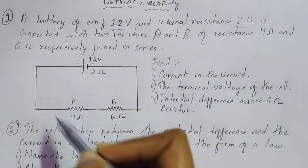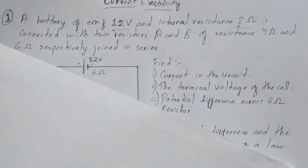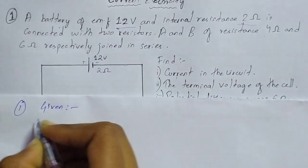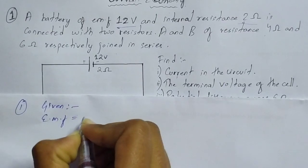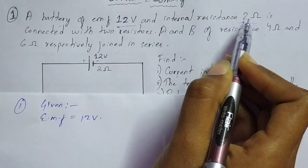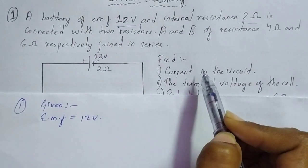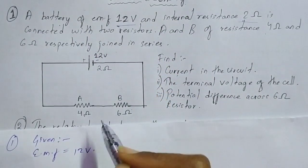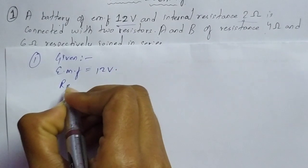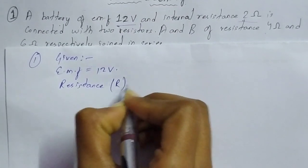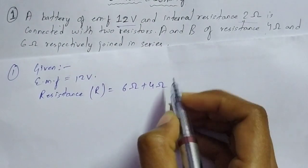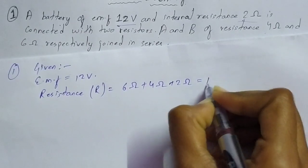First you have to find out the current in the circuit. We will solve it on this sheet. What is given? EMF or voltage is 12 volt. Internal resistance is also given. To find the current, we first need the total resistance: 6 ohm plus 4 ohm plus 2 ohm internal resistance, which gives an overall resistance of 12 ohm.